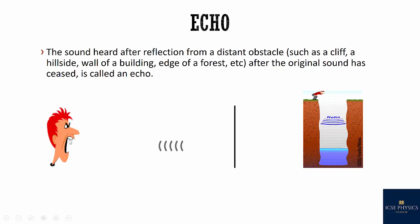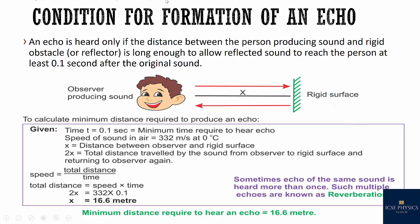And what happens to the distance? It is always twice the distance between the obstacle and the sound producer. So the distance will be always 2D. One D and then another D. So condition for formation of an echo. An echo is heard if the distance between the person producing sound and the rigid obstacle is long enough to allow reflected sound to reach the person at least 0.1 second after the original sound.